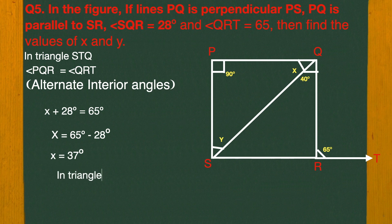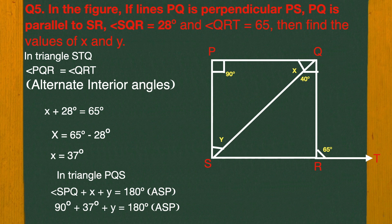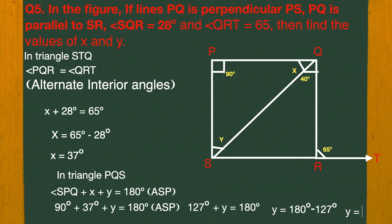Now in triangle PQS, angle SPQ plus X plus Y equals 180 degrees. We have angle SPQ as 90 degrees, X as 37 degrees. So 90 plus 37 plus Y equals 180 degrees, giving 127 plus Y equals 180 degrees. Therefore Y equals 180 minus 127, which is 53 degrees. So X equals 37 degrees and Y equals 53 degrees.